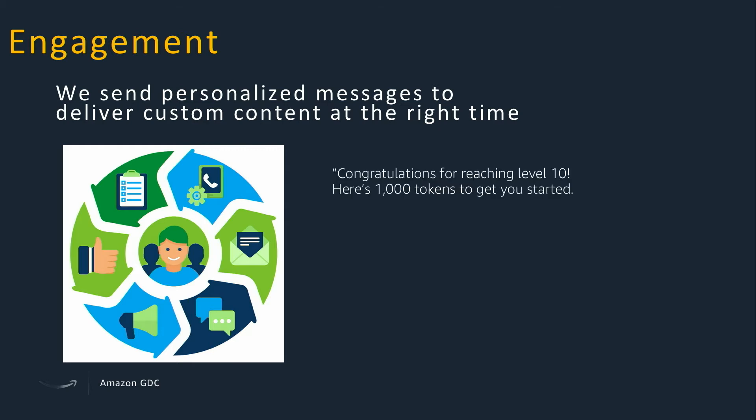For example: 'Congratulations, you reached level 10. Here's a thousand tokens.' We understand users who have reached that certain level and don't send it to all users saying 'go play, we'll give you some tokens.' The audience wants to be targeted directly — 'I feel great about reaching level 10, I'm going to get a few more tokens.' Another example: 'Please share this link with two friends.' This should be specific to number of sessions. You wouldn't send this the first time someone uses the app. If they've been using it for 30 days and they're playing a lot, you'd ask them to share because obviously they like the game. You can target based on the metrics you're collecting.